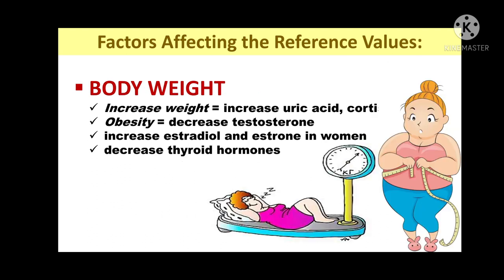Lastly, body weight: when you have increased body weight, probable analytes that can also be increased are uric acid, cortisol, cholesterol, and lipids. When one has obesity, either male or female, there is a decrease in testosterone. There can also be increased estradiol and estrone in women, and decreased thyroid hormones for obese patients.